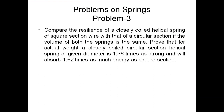So here the problem states that we are supposed to compare the resilience of a closed coil helical spring of a square section with that of a circular section. In the previous class we mentioned all the formulas related to closed coil and open coil helical springs. What we have to prove is that the circular section spring of a given diameter is 1.36 times as strong as the square section, and the circular section absorbs energy 1.62 times more than the square section. We are going to prove this.